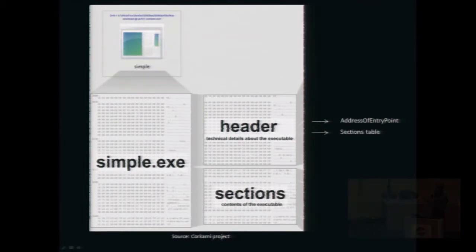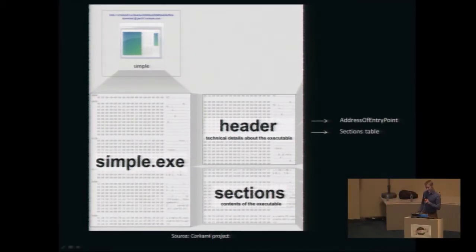Second, the header also contains a section table, which logically divides the data blob into sections. For example, with a simple Hello World program in C++ compiled with Visual Studio, the first section is the .text section, which contains your code — in our case, the MessageBox call.